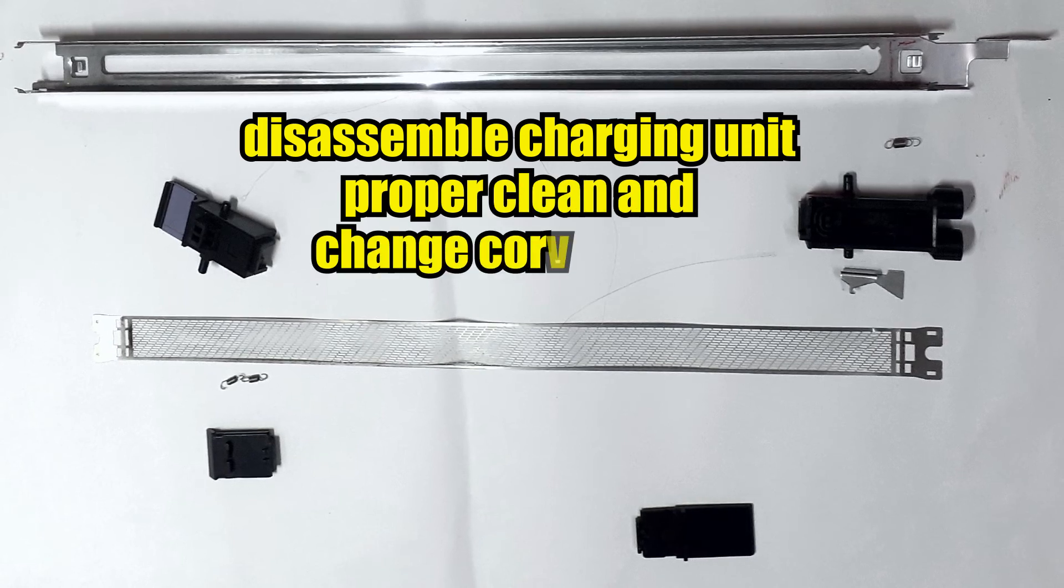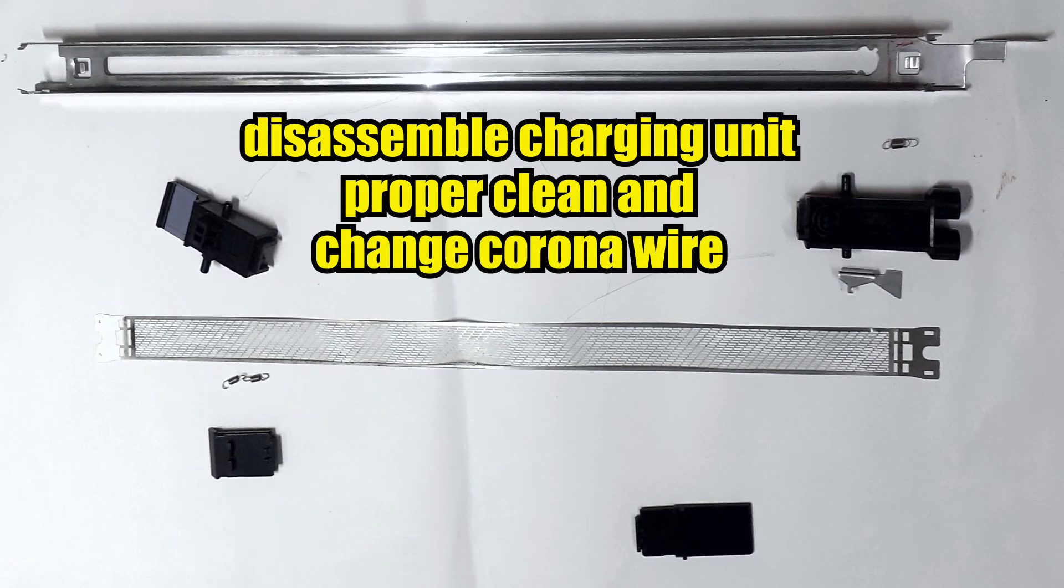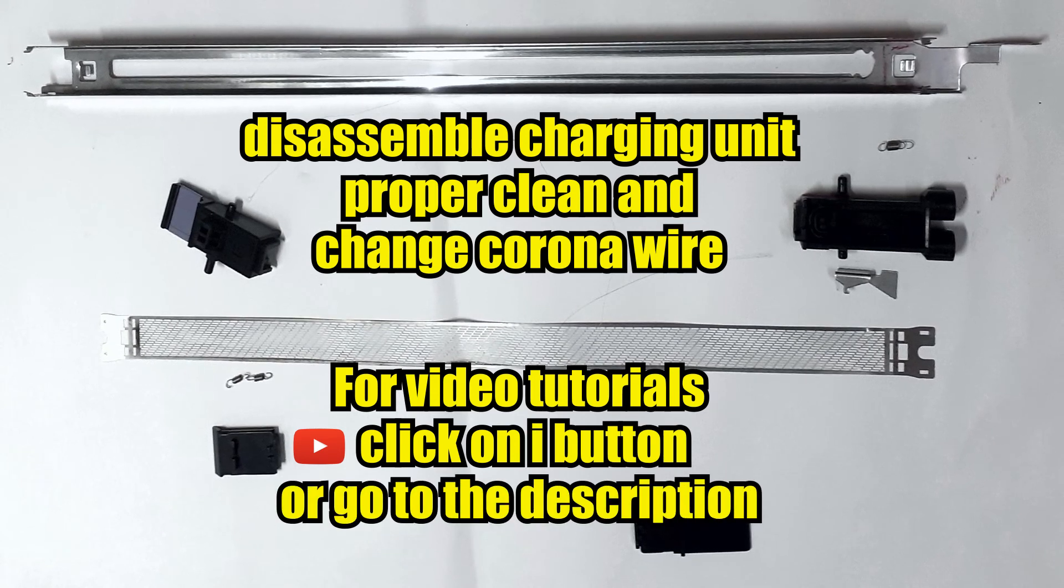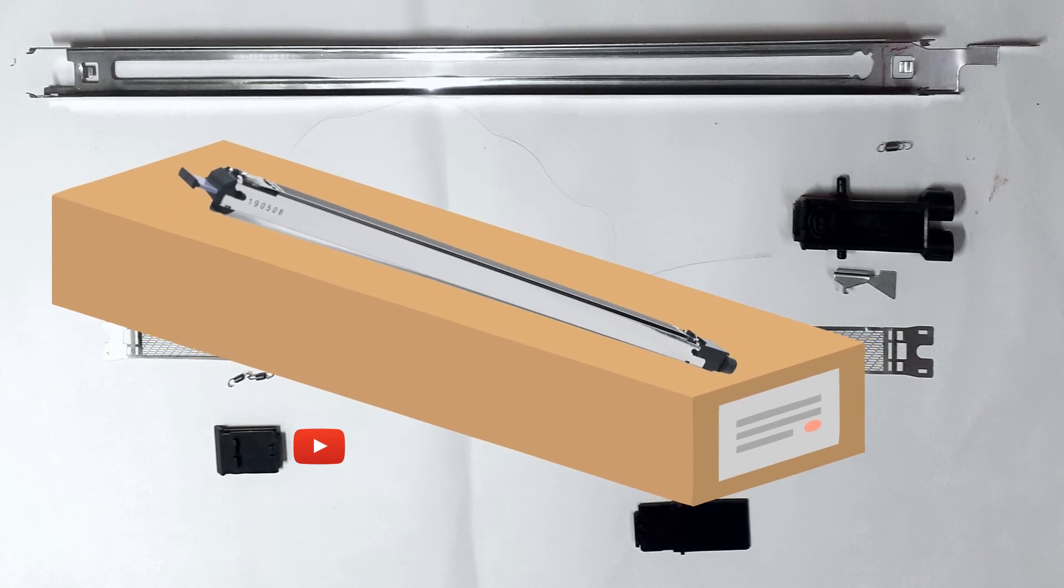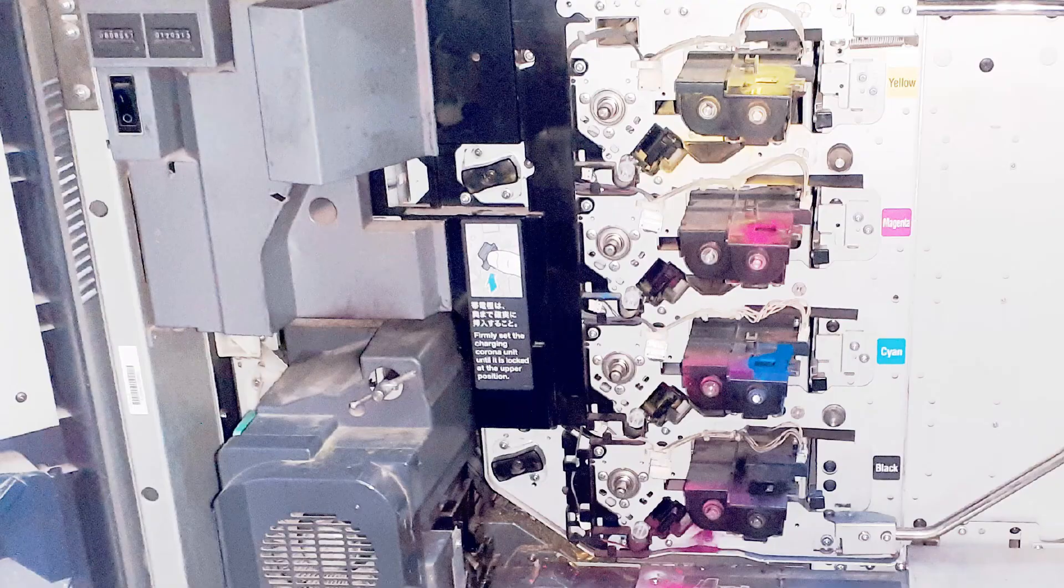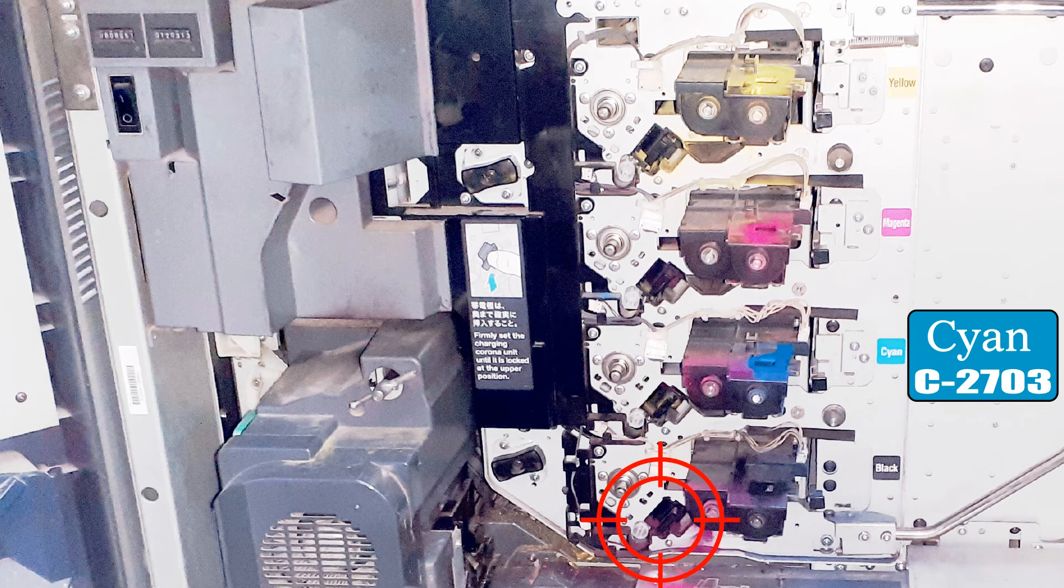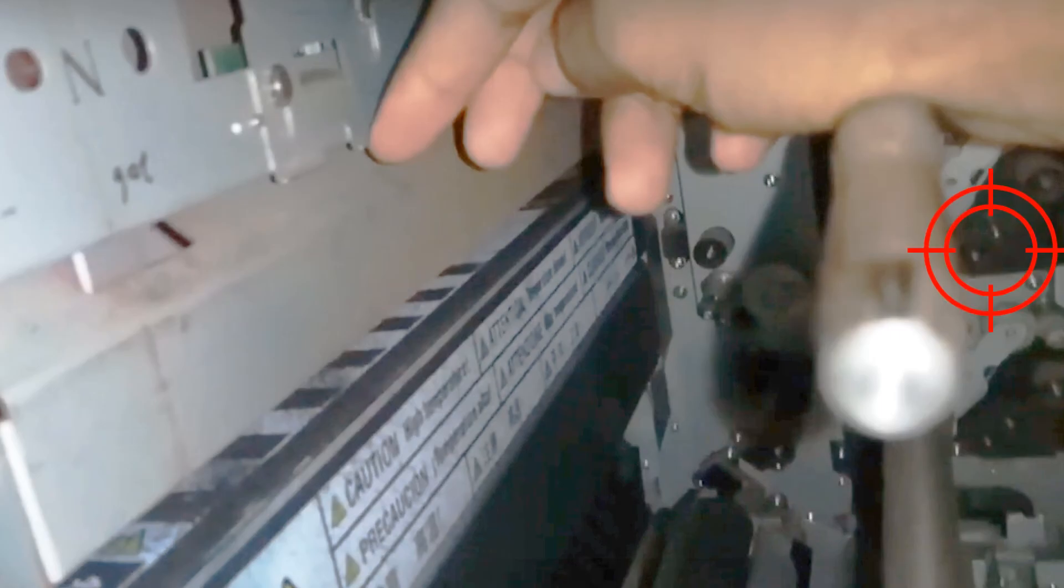Ab humein kharab charging unit ko acche se saaf karna hai aur corona taar ko badalna hai. Aap ise video par dekh sakte hain, video tutorial ka link upar i-button mein aa raha hai aur video ke description mein bhi video ka link hai. Ya ek nayi charging unit se saaf badlein. Agar error code 2703 hi aa raha hai toh phir se kaale corona unit ke saath badlein. Yadi error code corona unit ke saath nahi badalta hai toh iska matlab hai humein corona unit connector ko saaf karna hai jo process unit ke peeche hota hai.